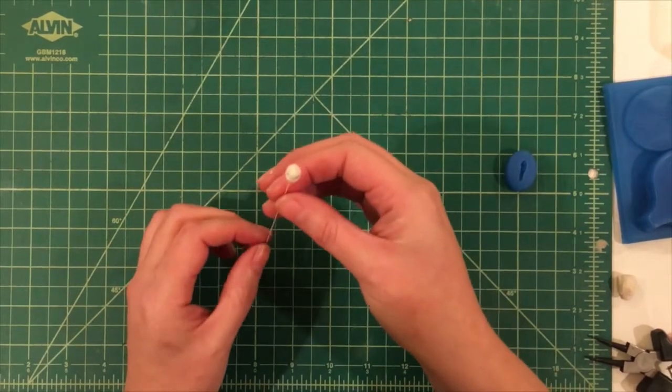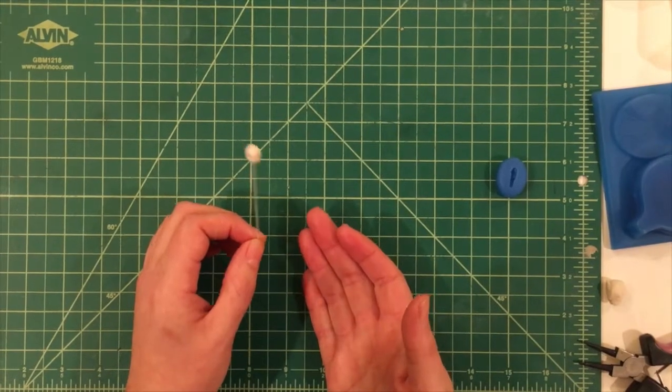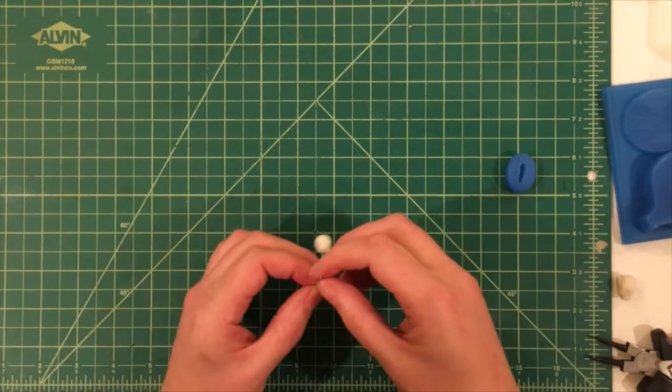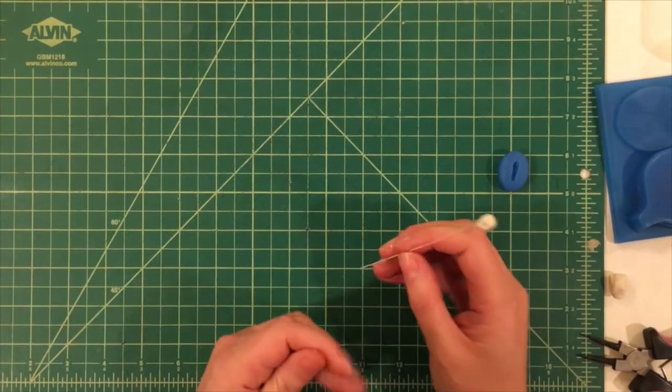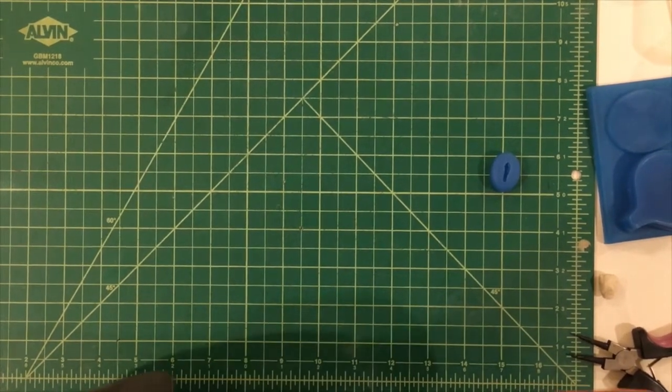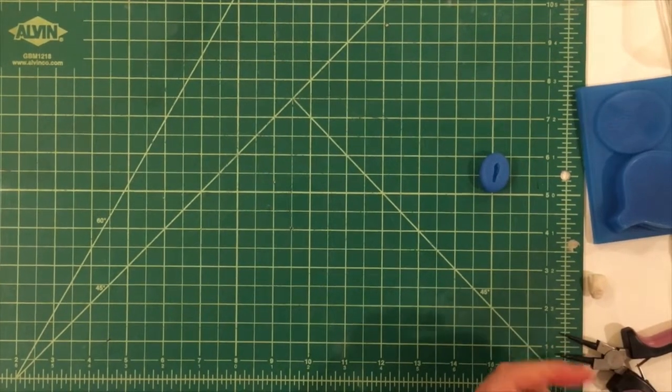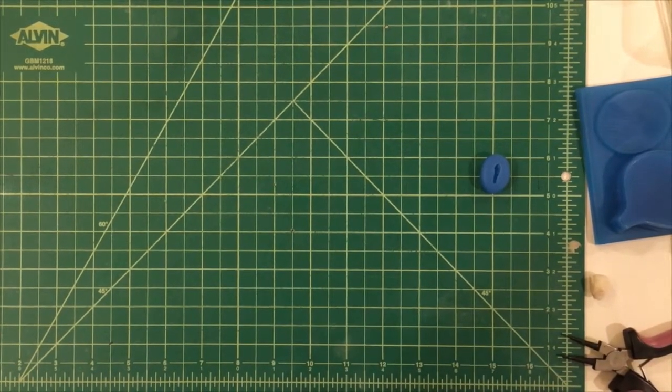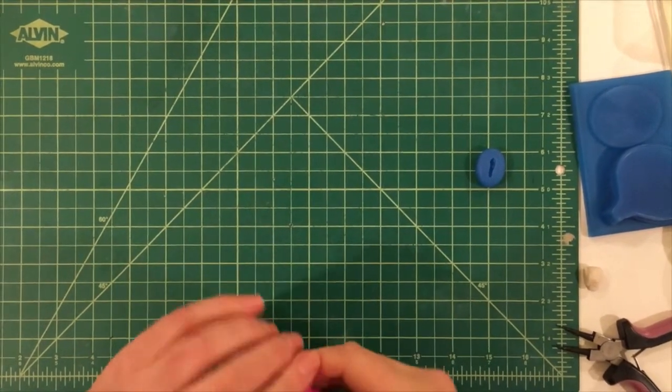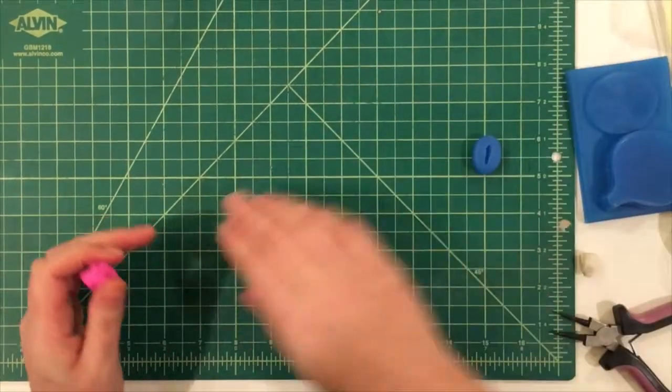And you want to let this guy dry for a few hours if not overnight. I tend to make a bunch of these all at once because you can store them for any length of time. And that way, whenever you want to make an orchid, you've got the snoot. I've got one that's already been drying, so we're going to continue on and make our throat. And so for that, I'm going to use a slightly darker pink than what I'm going to use for the petals. It's a nice hot pink.